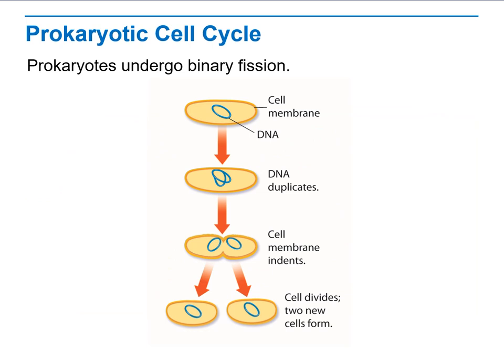In prokaryotic cells, they don't go through cell division in the same way. It's only replication — the mother cell simply duplicates and divides the cytoplasm into two identical daughter cells. This procedure is called binary fission.